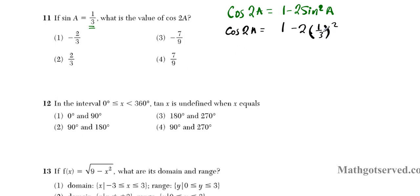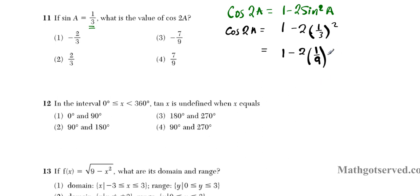When you square 1/3, we're going to square the numerator and the denominator. So we're going to have 1 minus 2 times 1/9. Now we use the order of operations to simplify. We multiply first, then subtract. Imagine the 2 as being 2 over 1, so multiplying numerators and denominators gives us 2 over 9.